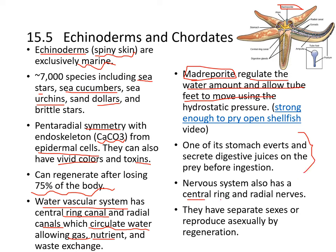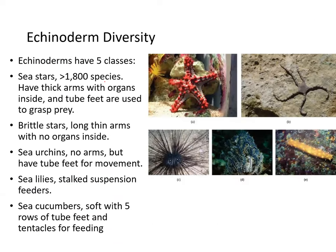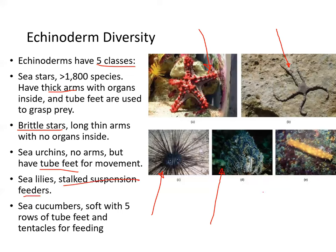Their nervous system also has a central ring. Echinoderms can have separate sexes or reproduce asexually by regenerating. They have five classes: sea stars have about 1,800 species with thick arms, as compared to brittle stars which have thin arms. Sea urchins have tube feet but no arms. Sea lilies are stalked suspension feeders. Sea cucumbers are very soft, with five rows of tube feet and tentacles for feeding.